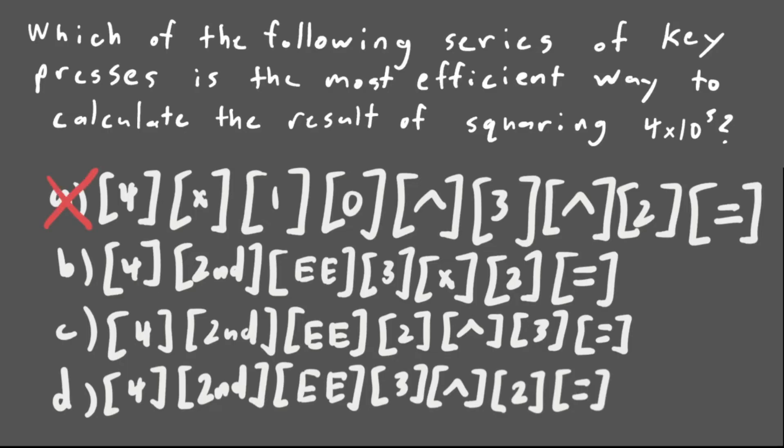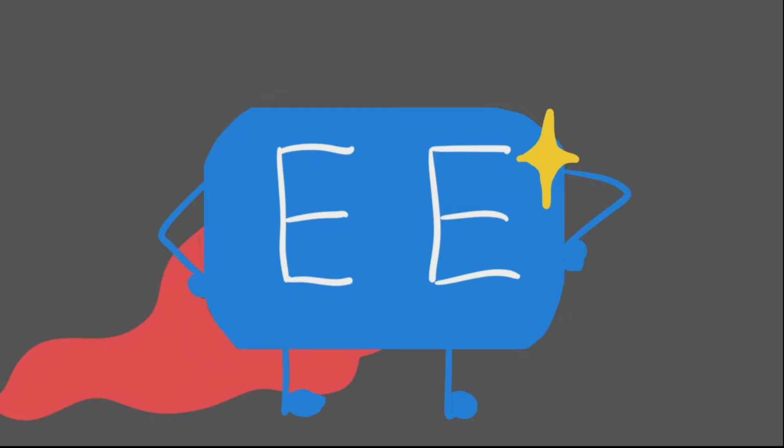The second one puts down a multiplication sign instead of an exponent sign, which would just multiply the number by 2. The third option is a little sneaky, and it switches the order of the 2 and the 3, which would be 4 times 10 to the second cubed. Lastly, the fourth option here is correct, with a 4, second, EE, 3, which is the 4 times 10 to the third, and the exponent, 2, afterwards squares the whole thing. See, what a lifesaver!